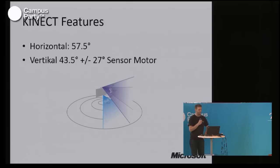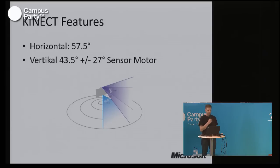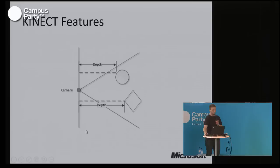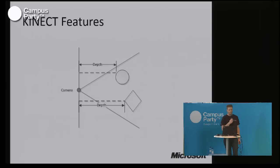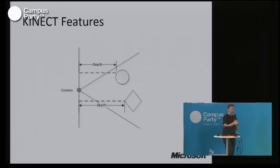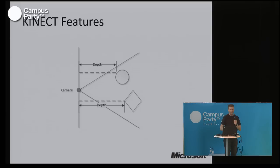You have a horizontal range of 75.5 degrees and a vertical range of 43.5 degrees. This can be extended by controlling the motor, giving you another plus or minus 27 degrees. Most importantly, the depth image gives you, for every pixel in your RGB picture from the RGB camera stream, an actual depth value — and the depth information is the absolute distance between the camera and the object.